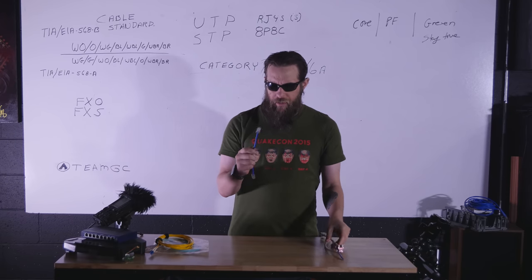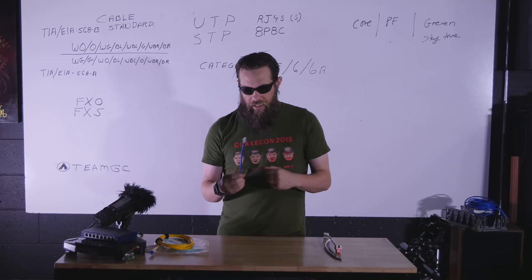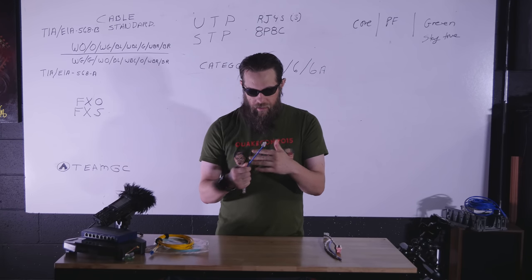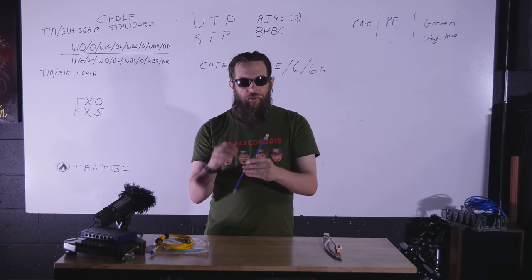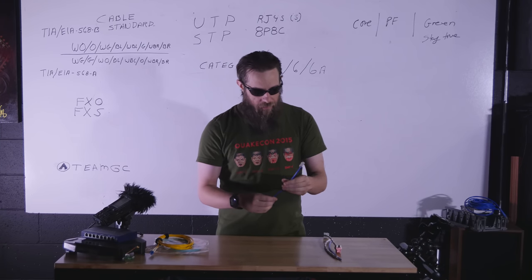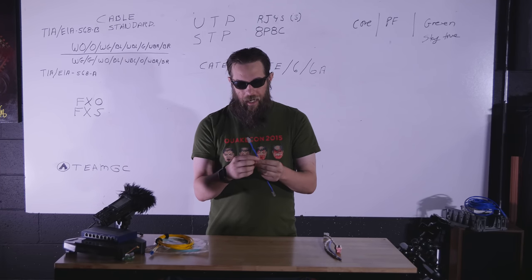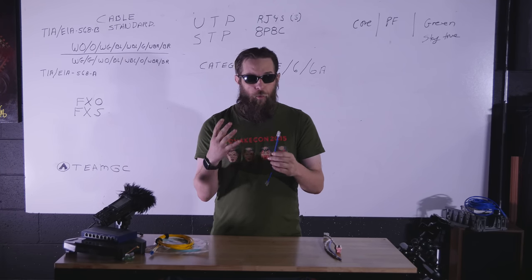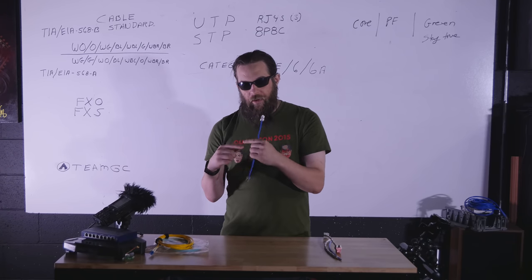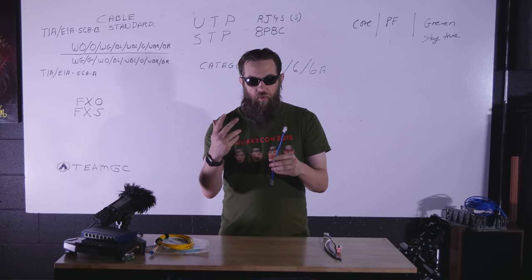Cat 5e is your general use gigabit network cable. You're going to find it pretty much everywhere. It is rated and tested up to 100 megahertz — that's the electrical signals being sent down the line. Each of these cables is made up of eight conductors — there are eight wires, each separated into four pairs. Each pair is wound together in a spiral, kind of like a piece of DNA. It's just twisted together.